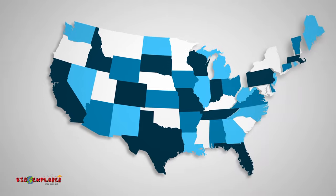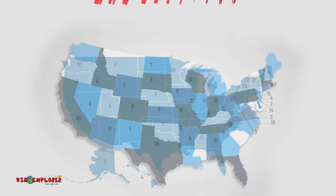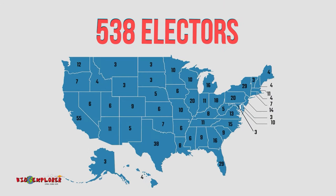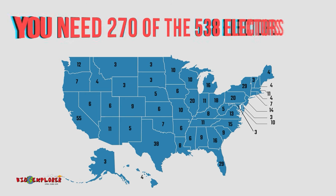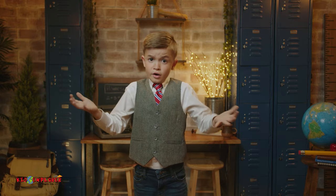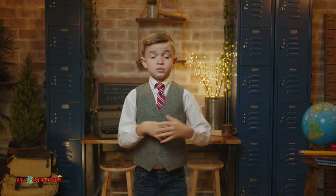The Electoral College consists of 538 electors, and to win the election you have to have at least 270 of those electoral votes. So, what are electors?